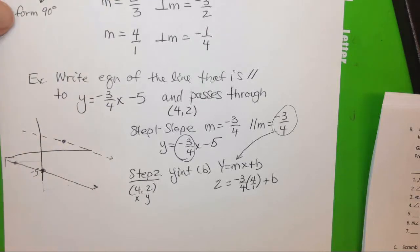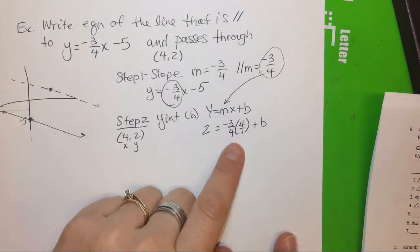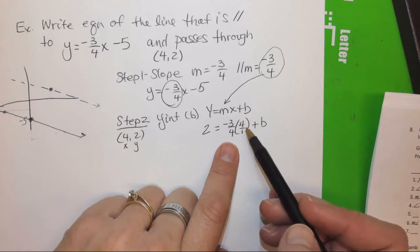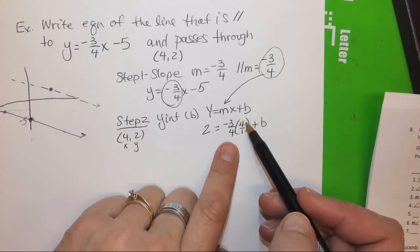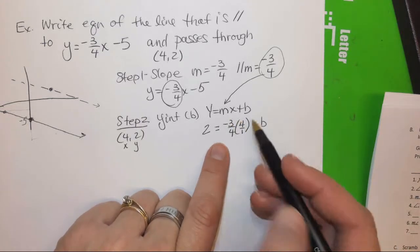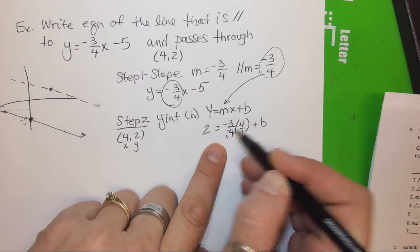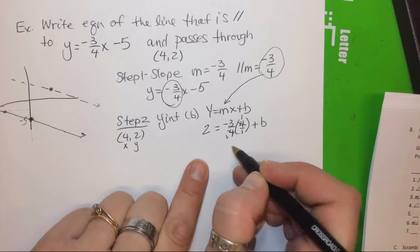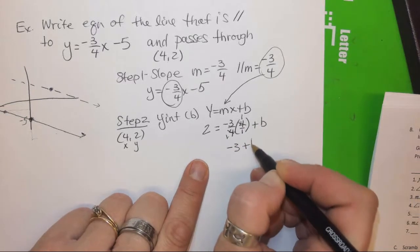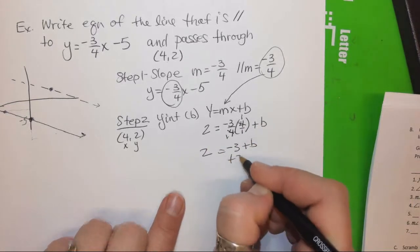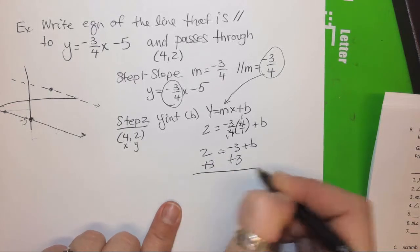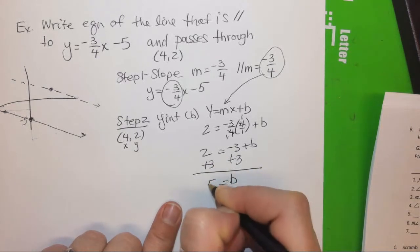Now, this is pretty. I don't want you to go to a calculator for multiplying these fractions. Remember, when we multiply fractions, you can cross-simplify. So, as long as you have a numerator and denominator. So four goes into four once. Four goes into four once. And I end up with negative three plus b equals two. Solve for b. So b is five.